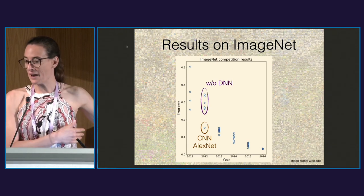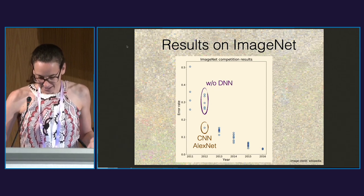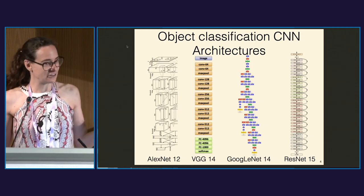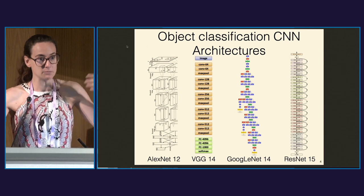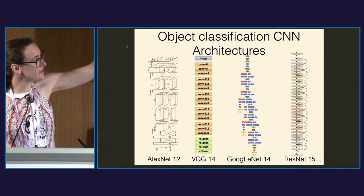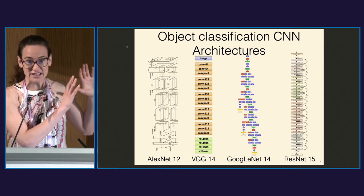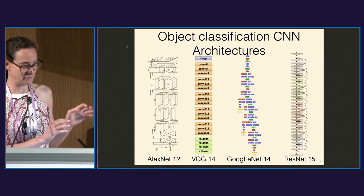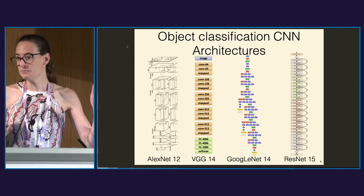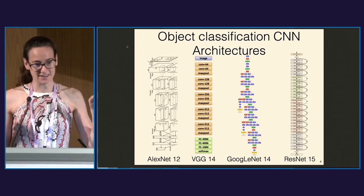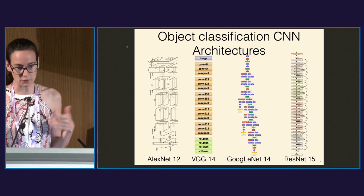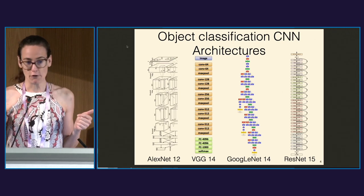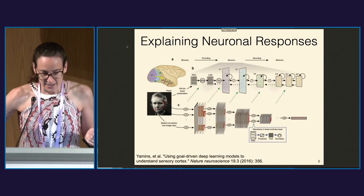The error went down and accuracy improved for the specific task of predicting which object is in an image. You can see different architectures here — these were engineered not to mimic the brain but to win the challenge. They were made bigger, deeper, and wider with many optimization engineering tricks to learn better and stronger representations for object categorization.